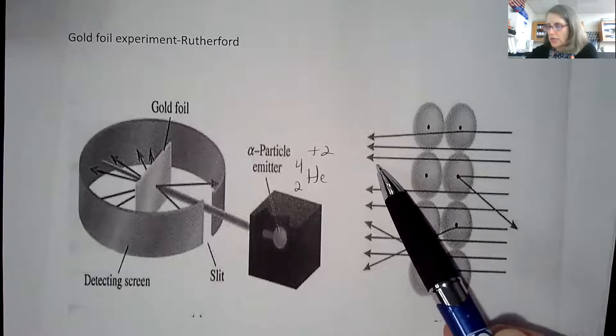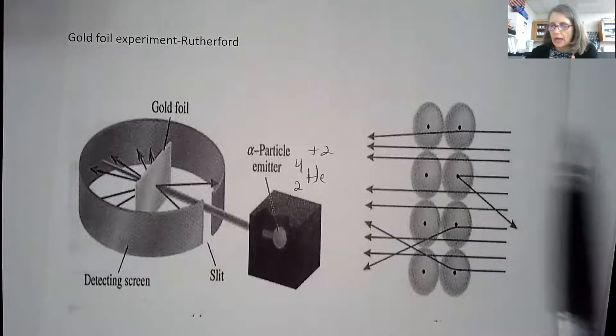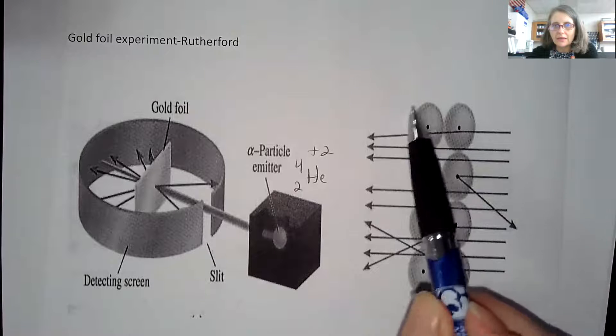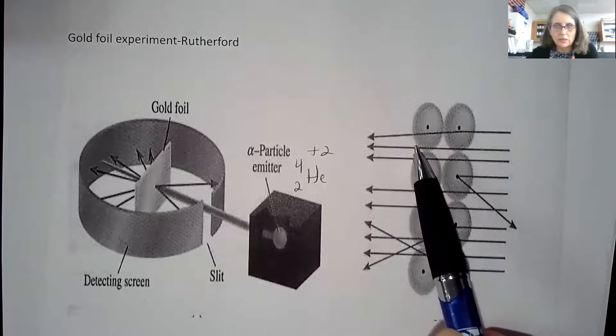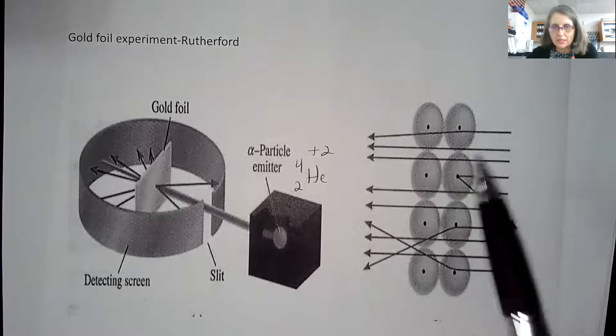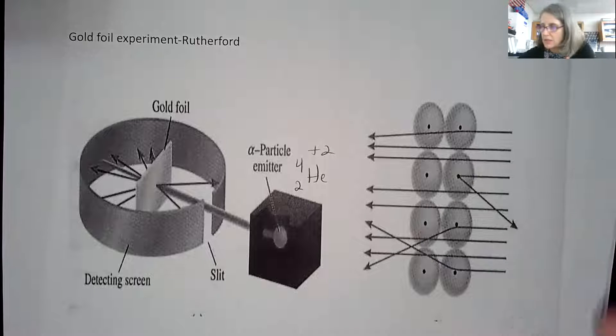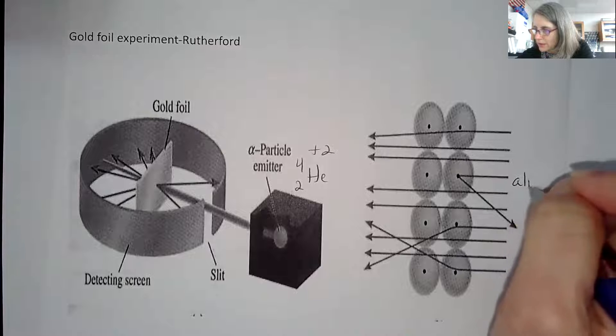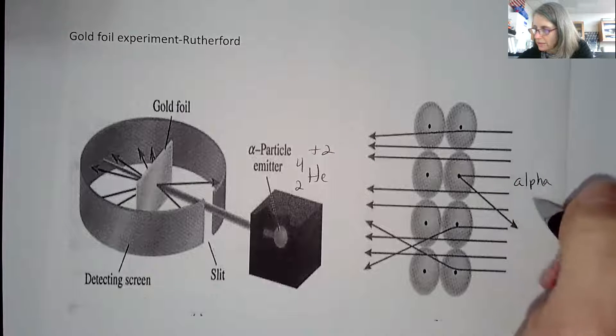This picture over here shows if the dot here is the nucleus and then the cloud around it is where the electrons are existing. And this is your alpha particle - these are all alpha particles, all positive two going through the atom.